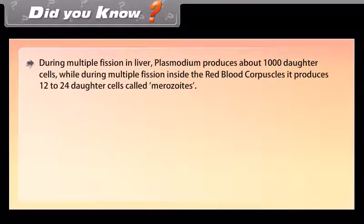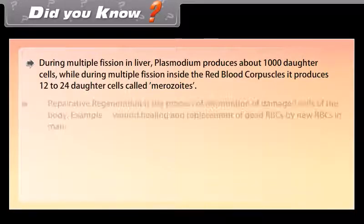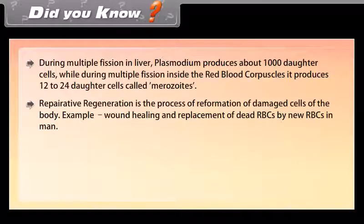During multiple fission in the liver, Plasmodium produces about 1,000 daughter cells, while during multiple fission inside the red blood corpuscles, it produces 12 to 24 daughter cells called merozoites. Reparative regeneration is the process of re-formation of damaged cells of the body — for example, wound healing and replacement of dead RBCs by new RBCs in man.